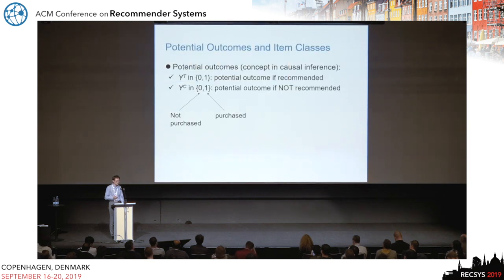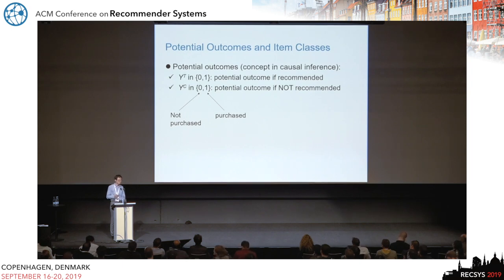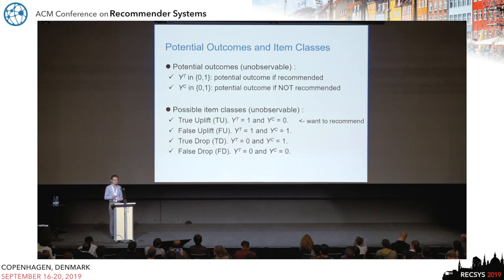For evaluation, I introduce the notion of potential outcomes from causal inference. Y1 is the potential outcome if recommended, and Y0 is the potential outcome if not recommended. From the combination of potential outcomes, there are four possible item classes: true uplift, false uplift, true drop, and false drop.